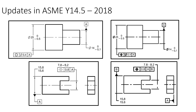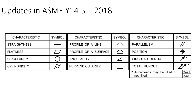Concentricity and symmetry concepts and symbols have been removed in this revised standard, and now we have only 12 geometric characteristic symbols. These two concepts were always controversial and complicated, controlling the median points of a feature relative to a datum. These two symbols are now replaced with positional tolerance, which is more appropriate for controlling axis-to-axis and center-plane-to-center-plane requirements. Thus, as per ASME Y14.5 2018, we have only 12 geometric characteristic symbols.